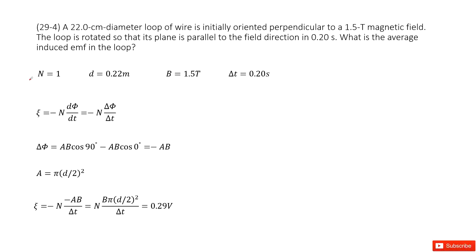Now let's see what the given quantities are. First it gives us how many turns of the loop - it says a loop, so N equals 1. The diameter is given, the B magnetic field is given, time taken is given.